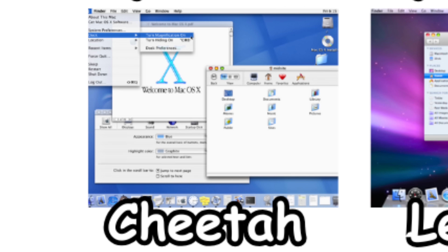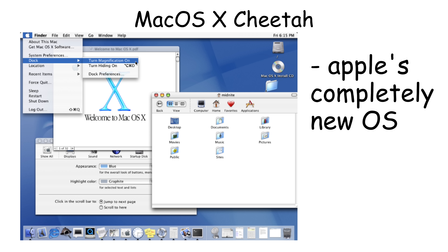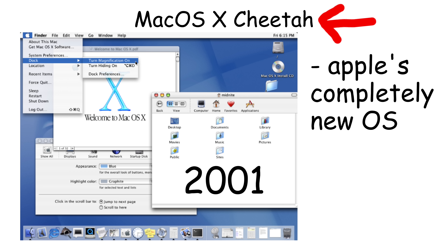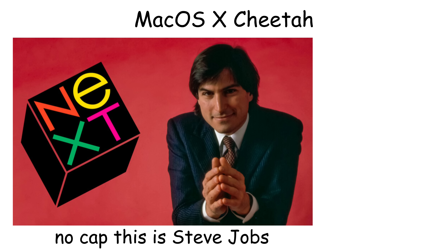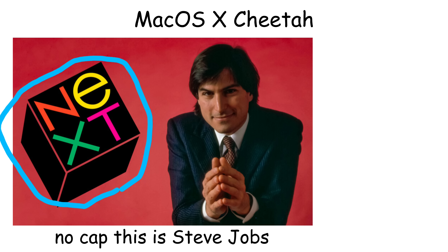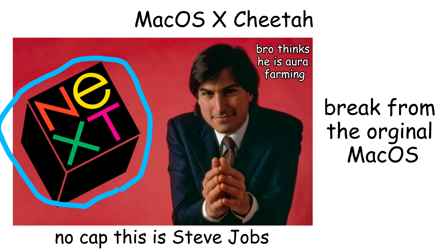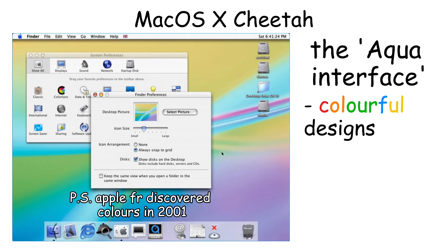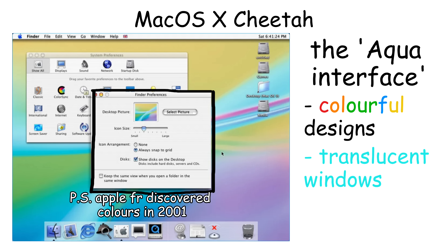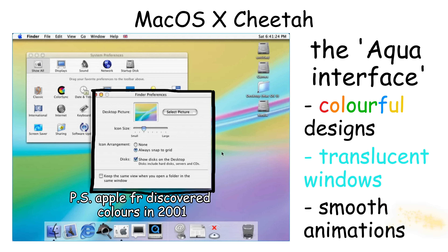Mac OS X Cheetah was released in 2001 as Apple's first completely new operating system built on Unix foundations. It was created after Apple acquired NeXT, Steve Jobs' company, and represented a complete break from the classic Mac OS. Cheetah introduced the Aqua interface with colorful, glossy designs, translucent windows, and smooth animations.